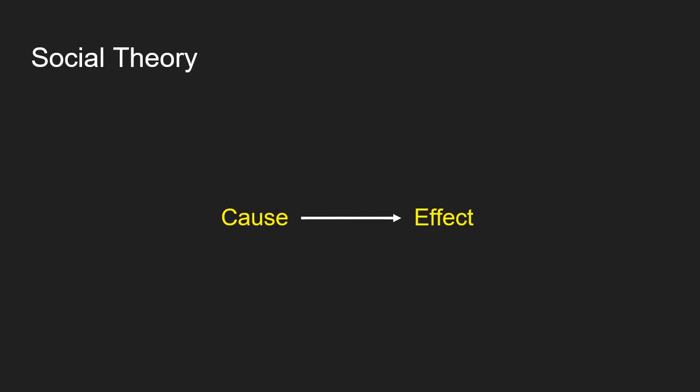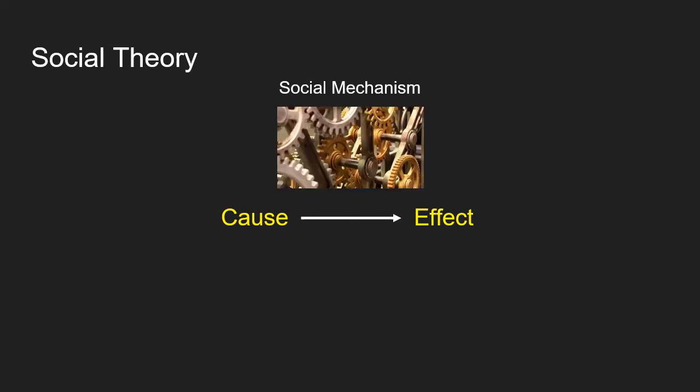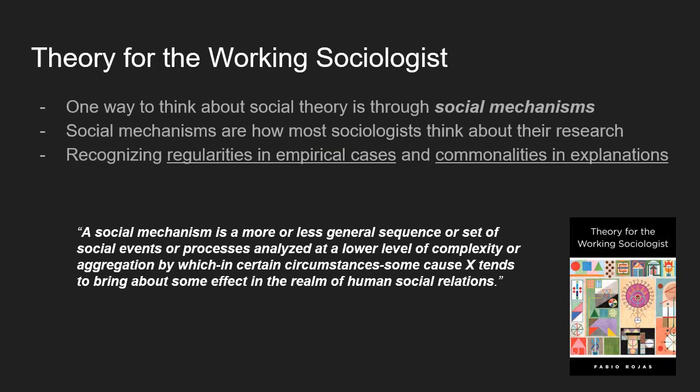I would like you to think about social theory slightly differently — think about social mechanisms. Social mechanisms are a pattern or process that helps to explain a social phenomenon. In the book Theory for the Working Sociologist, social mechanisms are offered as a way to think about social theory in everyday sociology, and this is how most sociologists think about their research.